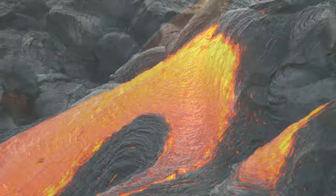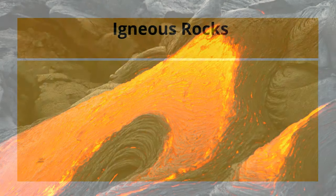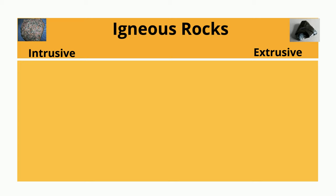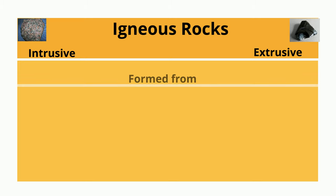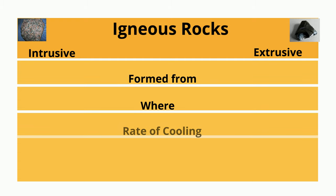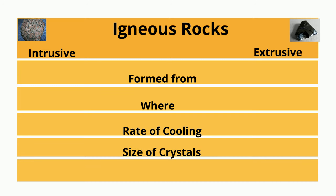There are two major types of igneous rocks: intrusive and extrusive. Let's take a look at how intrusive and extrusive rocks differ in terms of what they're formed from, where they are created, the rate of cooling, the size of crystals, and the texture.